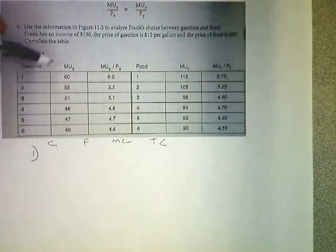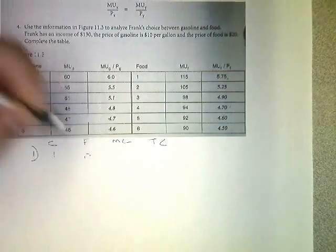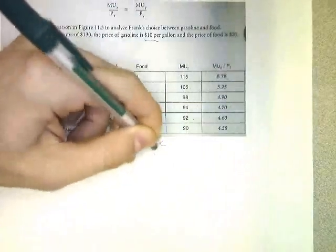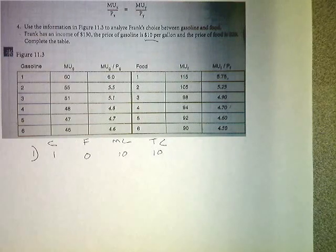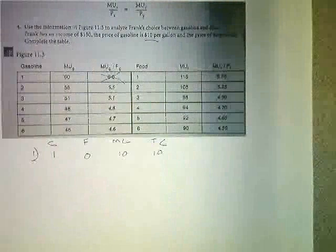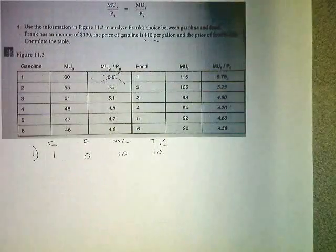So in round one, Frank decides to buy the first unit of gas. He doesn't buy any food. The cost of that decision is $10, and his total cost right now is $10, and this is where we're at. Now another thing that you might do at this point is put an X over this one. So we know that he's already bought the first one. Or you might want to put a dot off to the side in case you make a mistake and want to go back.